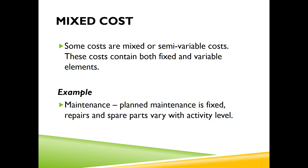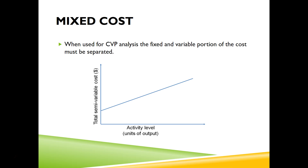Mixed costs are also called semi-variable costs and have both fixed and variable elements. For example, maintenance cost — even when you maintain nothing, you still need to pay the worker something, so it doesn't start from zero. In the total mixed cost graph, even at zero activity, your cost doesn't start at zero; you pay a certain basic amount, but the more you need to maintain your equipment, the more you pay. Similarly, for electricity or telephone bills, there may be a minimum charge even with zero usage, but the more you use, the more you're charged.